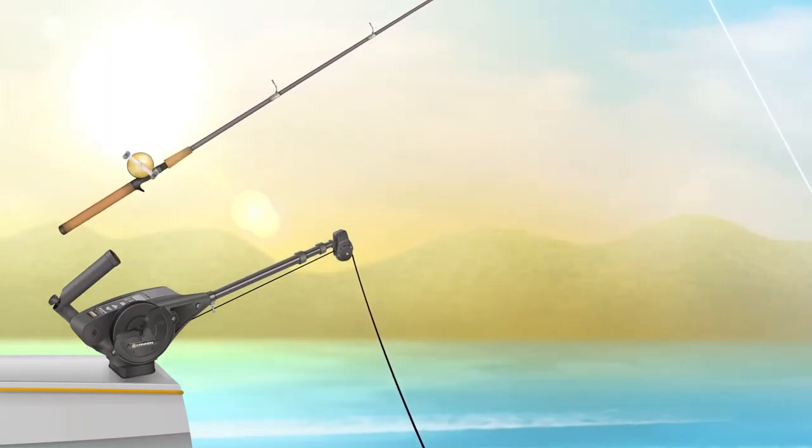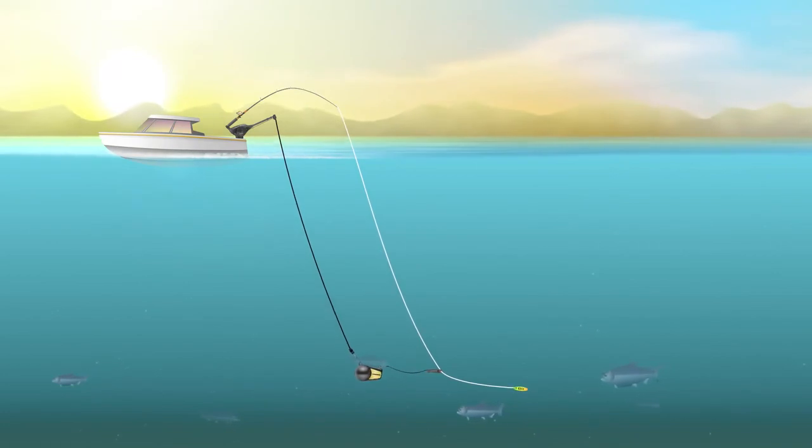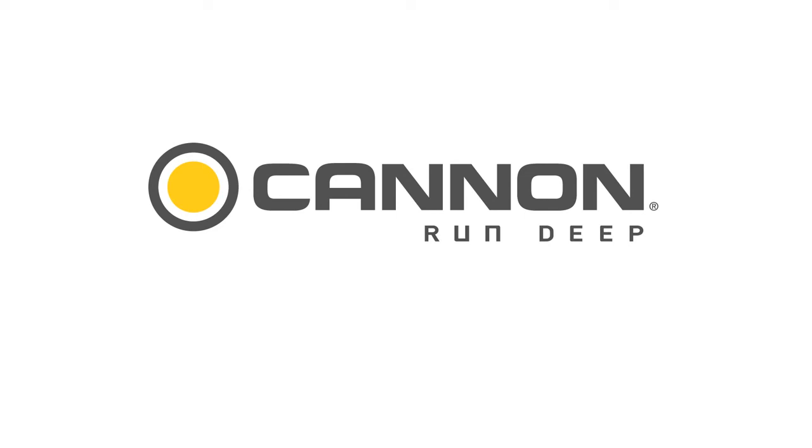That's how a downrigger helps you master controlled depth fishing by getting your bait where the fish are and keeping it there. Cannon - run deep.